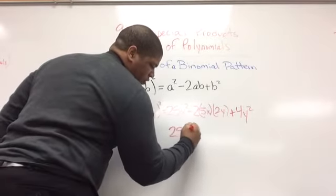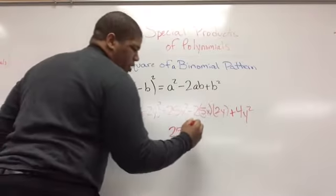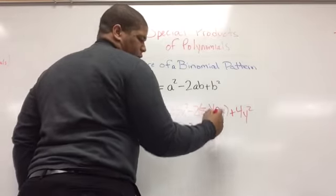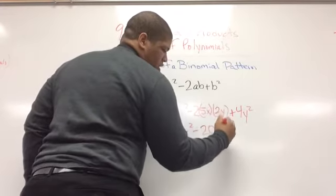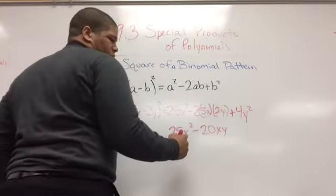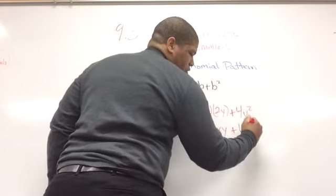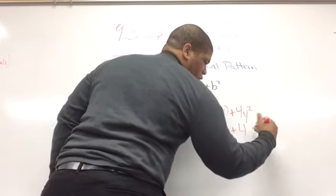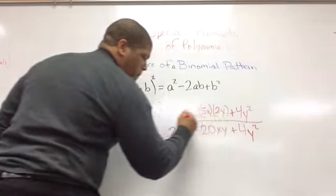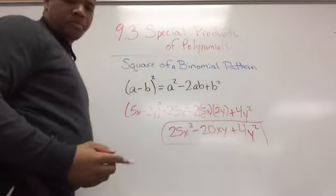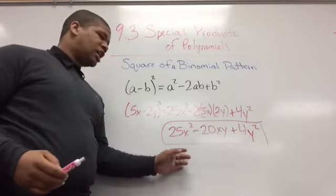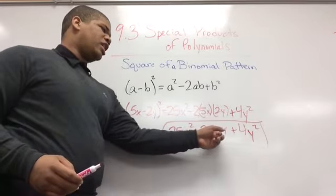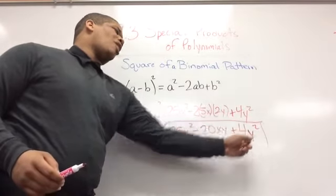Bringing this down, it's going to give me 25x squared, minus 2 times 5 is 10, times 2 is 20, and there's an x and a y in there — so minus 20xy — plus 4y squared. So this is going to be my answer: 25x squared minus 20xy plus 4y squared.